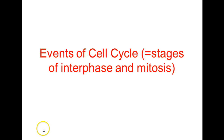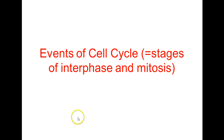Hello, this is part 3 of chapter 10, the cell division chapter for General Biology 1. We're going to start here with the events of the cell cycle, that is the stages of interphase and mitosis.